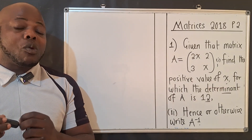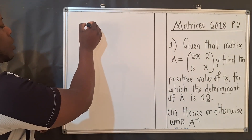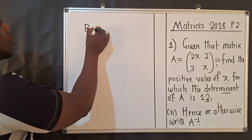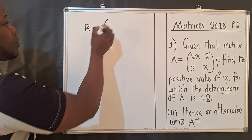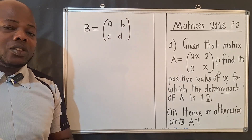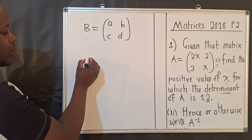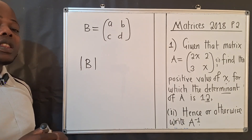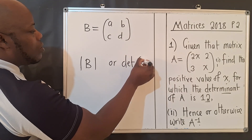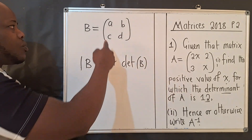If you're learning this topic for the first time, keep in mind that when dealing with matrices — say you have matrix B equal to [a, b; c, d] — the word 'determinant' is denoted using bars, like this, or you can use the 'det' symbol. Both mean the same thing.